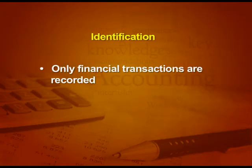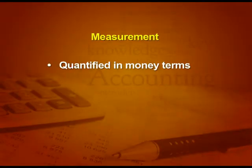Identification means only financial transactions are recorded. For example, a very good employee may benefit the organization, but we cannot record it because we cannot express it in financial terms. Only financial transactions are identified. Then we measure these transactions in money terms — in accounts we record in rupees, not in quantity or kilograms, only in rupees.